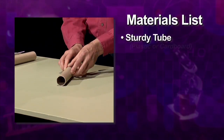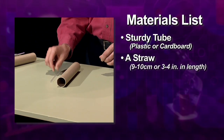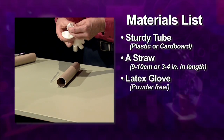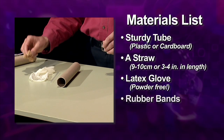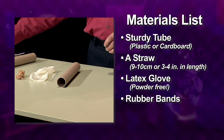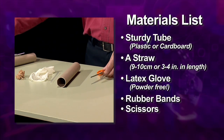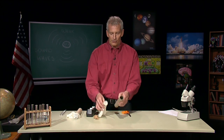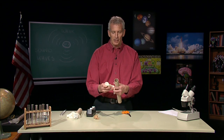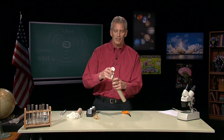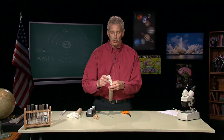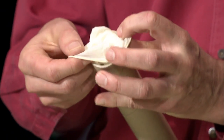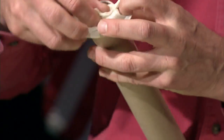...a tube, a straw, a latex glove, some rubber bands, scissors, and tape. It starts by inserting the glove into the end of the tube, all the way down and in, just leaving the edge sticking out.